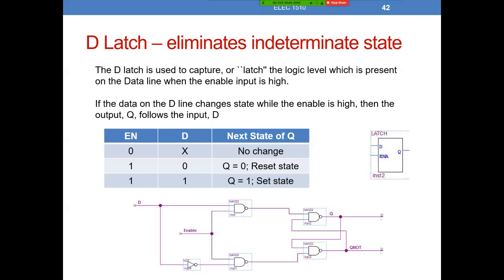Here's a block symbol for the latch. Our input will be called D. The latch's output is Q. There's not typically a Q-not output from the latch because once we have Q, we could always grab that signal and invert it. And then we have the enable on the latch — so two inputs to the latch: D and the enable.